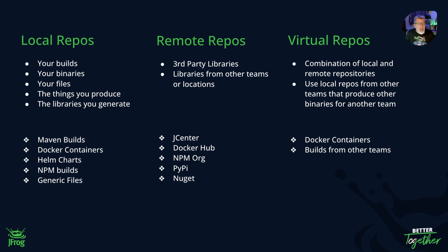In addition to that, you can have multiple local repositories to emulate your software development lifecycle. You can have dev and QA, production, and be able to go ahead and if you publish a build and put it into a local repository in Artifactory, it has all the context information around that build itself and allows you to use our promotion API to promote through the actual build cycle in the local repositories.